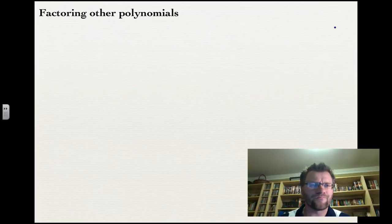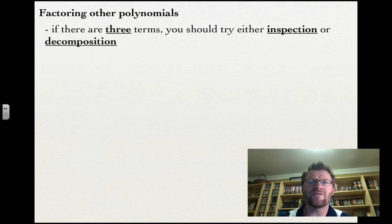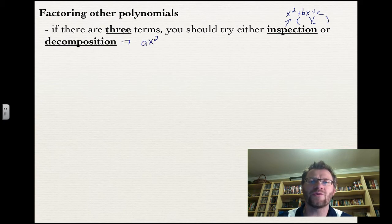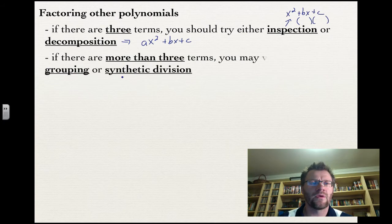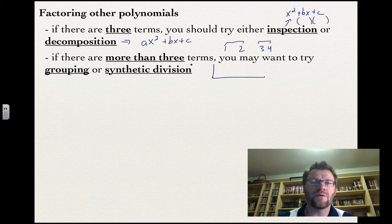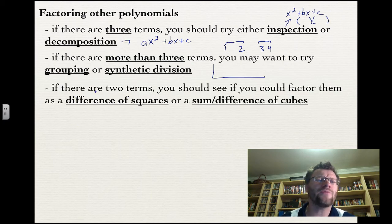Factoring other types of polynomials: if there are three terms, try inspection or decomposition. Inspection is used when there is no coefficient in front of x², meaning you find two numbers that multiply to give c and add to give b. Decomposition is used when there is a coefficient in front of x². If there are more than three terms, try grouping — group pairs of terms and take out a GCF from each group — or use synthetic division, which uses the long-L method and is helpful for longer polynomials. If there are only two terms, try factoring as a difference of squares or a sum or difference of cubes.